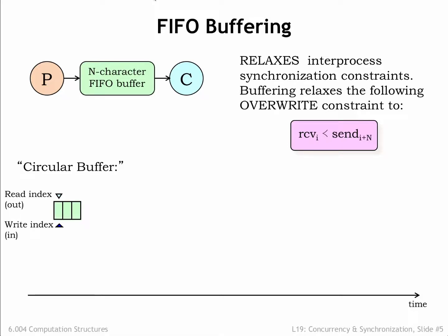FIFO buffers are implemented as an N-element character array with two indices. The read index indicates the next character to be read; the write index indicates the next character to be written. We'll also need a counter to keep track of the number of characters held by the buffer, though that's been omitted from this diagram. The indices are incremented modulo N — in other words, the next element accessed after the (N-1)th element is the zeroth element, hence the name circular buffer.